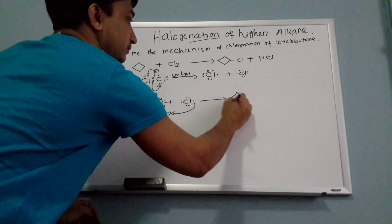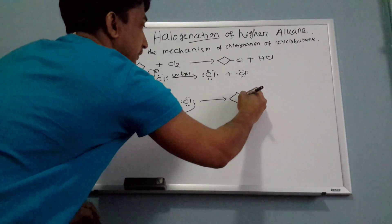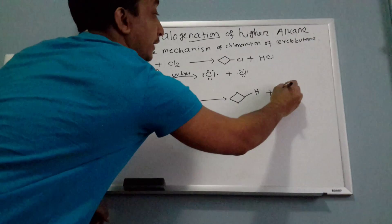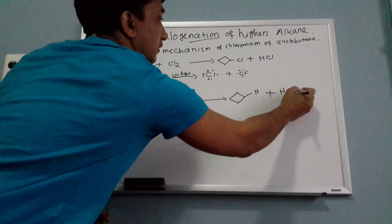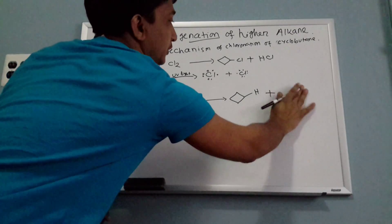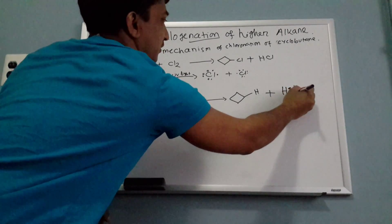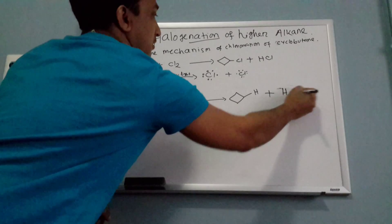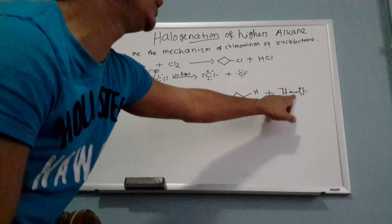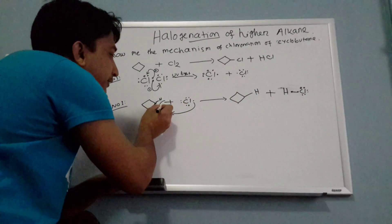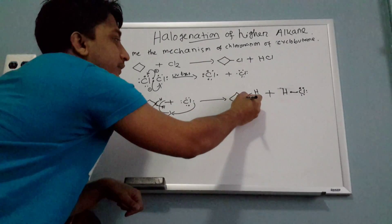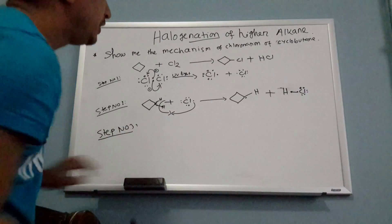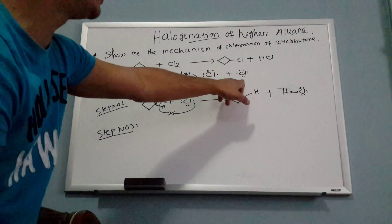What happens is: this chlorine and this hydrogen make hydrochloric acid (HCl). These two electrons go to the common bond. Then when the hydrogen leaves, one radical remains on the alkane carbon.